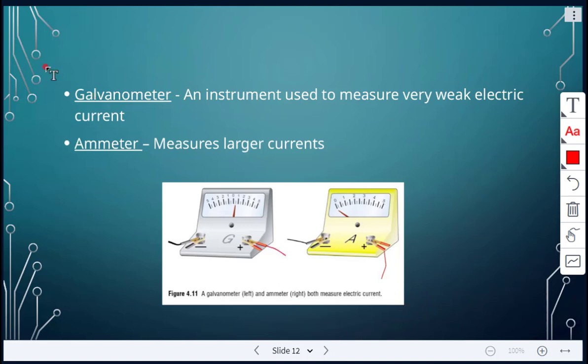And then these are two devices or instruments. So there's the galvanometer. And this is used to measure very weak electric current. And then there's an ammeter. And this one would measure larger current. So this is an example. It's a capital G there. That would be a galvanometer. And then here, capital A, that would be an ammeter. And here, both of them measure electric current. Galvanometer just is used to measure very weak electric current.